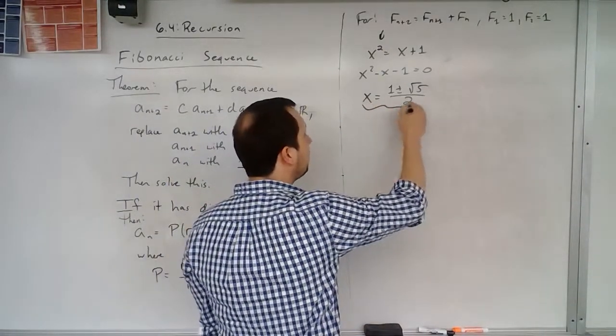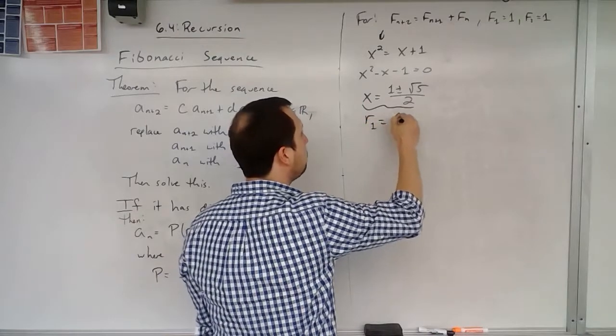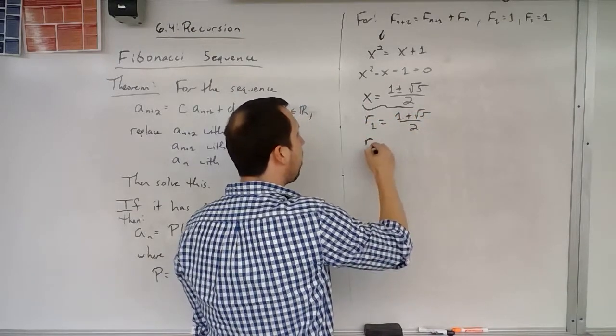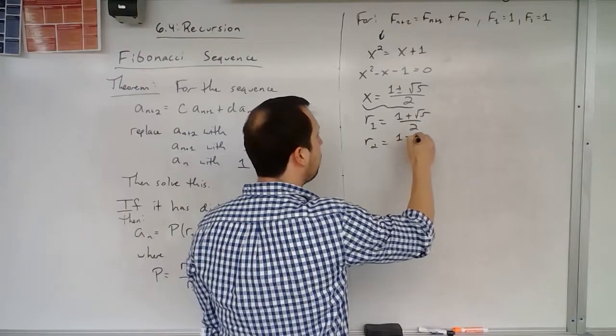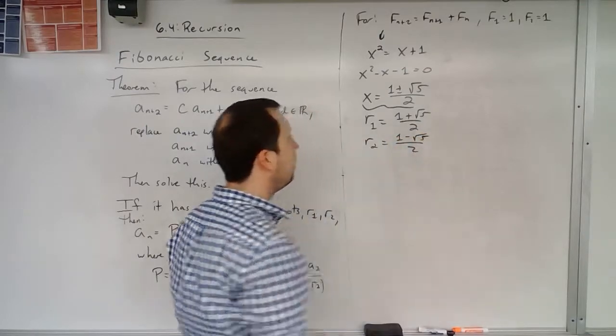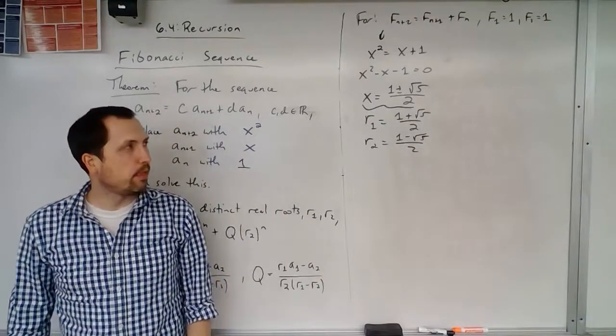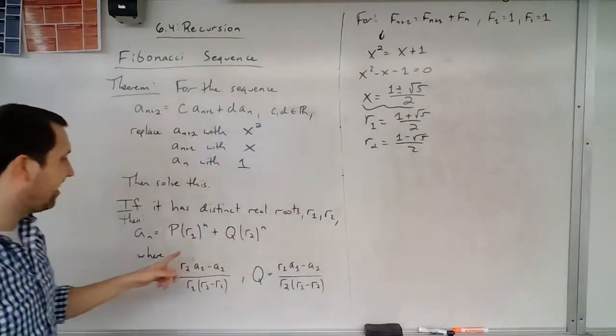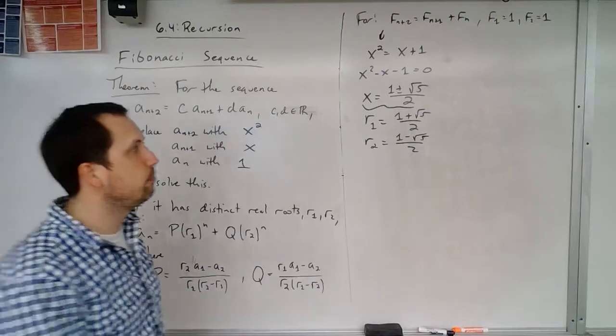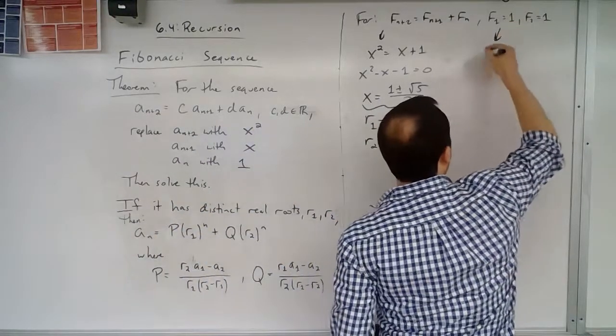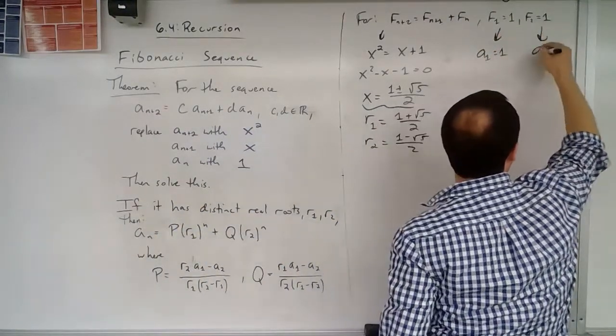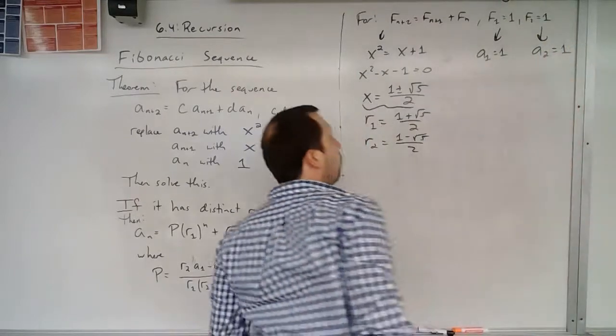So each of these values, I'm going to call r1 to be the positive one and r2 is going to be the negative one. So that's my r1, my r2. Now also with this, I have my a sub 1 and a sub 2. This corresponds to a sub 1 equals 1 and a sub 2 equals 1.